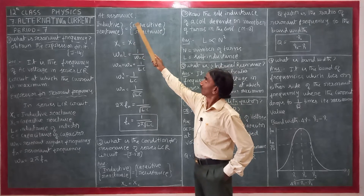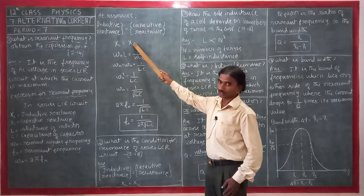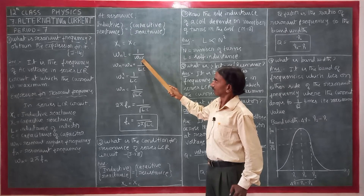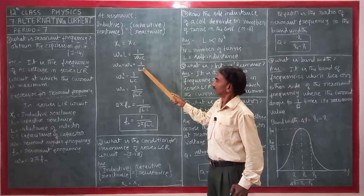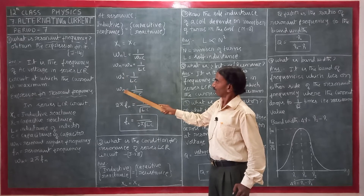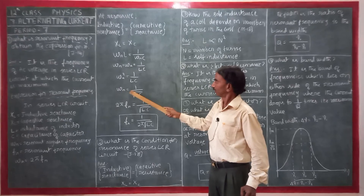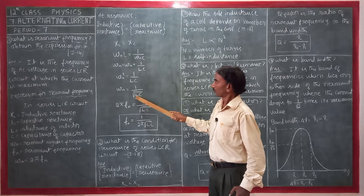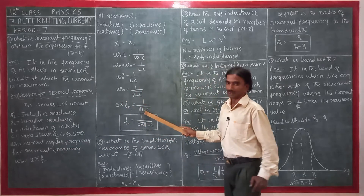Once more: at resonance, inductive reactance equals capacitive reactance, XL = XC. So ωr·L = 1/(ωr·C). By cross multiplication: ωr² = 1/(LC). Remove the square by taking square root: ωr = 1/√(LC). Since ωr = 2πfr, we get fr = 1/(2π√(LC)). By seeing it one time, then without seeing write this equation — it is a very important question.